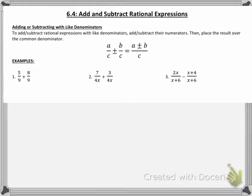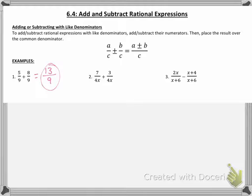If you look at number one, we have 5 over 9 plus 8 over 9. Since we have a common denominator, there's nothing we have to do. Our denominator is going to remain 9. All I have to do is add my numerators. 5 plus 8 is 13, and I get an answer of 13 over 9.